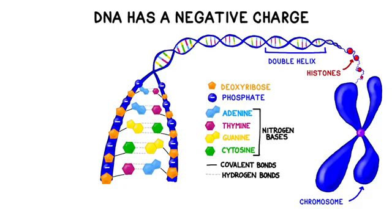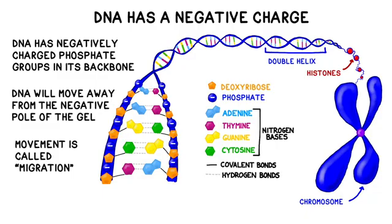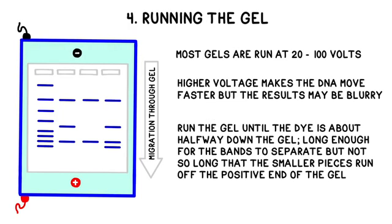DNA has a negative charge because it contains phosphate groups, so it will flow away from the negative end and towards the positive end of the field when you turn the box on. The movement across the gel is called migration.